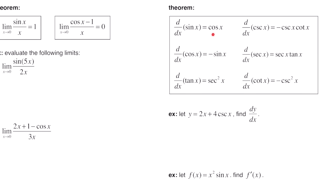That leads us to all the trig derivative theorems: the derivative of sine is cosine; cosine is negative sine; tangent is secant squared; cosecant is negative cosecant cotangent; secant is secant tangent; and cotangent is negative cosecant squared. A helpful pattern: any trig function that starts with 'c' has a negative derivative. I memorized these by repeating them out loud until they stick — sine is cosine, cosine is negative sine, tangent is secant squared, cotangent is negative cosecant squared, secant is secant tangent, cosecant is negative cosecant cotangent.